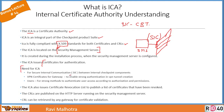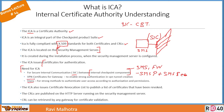The need for ICA: we need ICA to enable SIC between internal Check Point components — that means between the Security Management Server and the firewall, as well as between primary and secondary Security Management Servers. ICA is also used to issue certificates to users as well as to VPN gateways. If you want to create a site-to-site VPN tunnel between two gateways and want them to authenticate each other using certificates instead of a pre-shared key, you can use certificates issued by ICA.